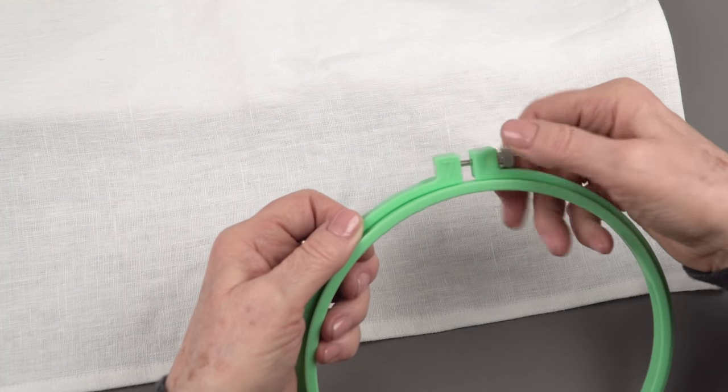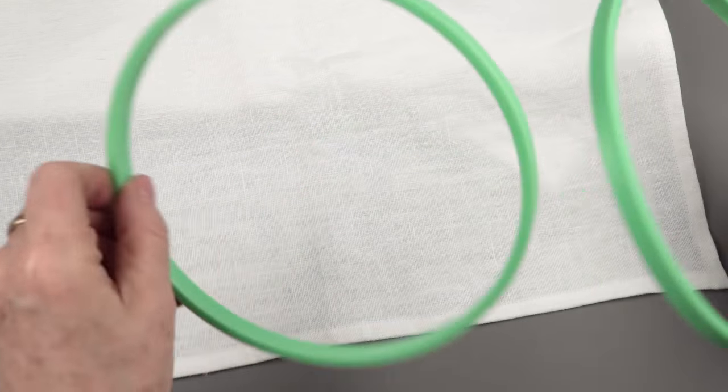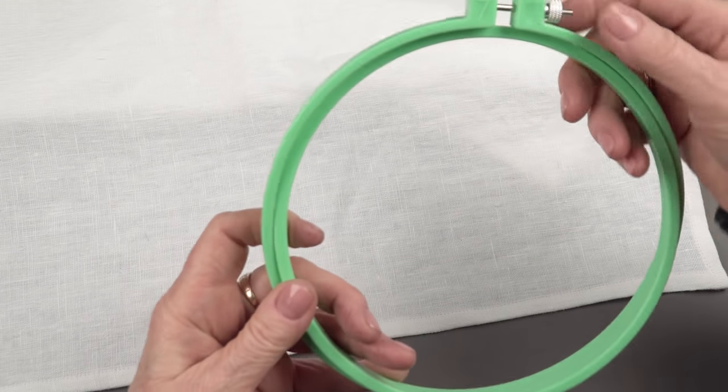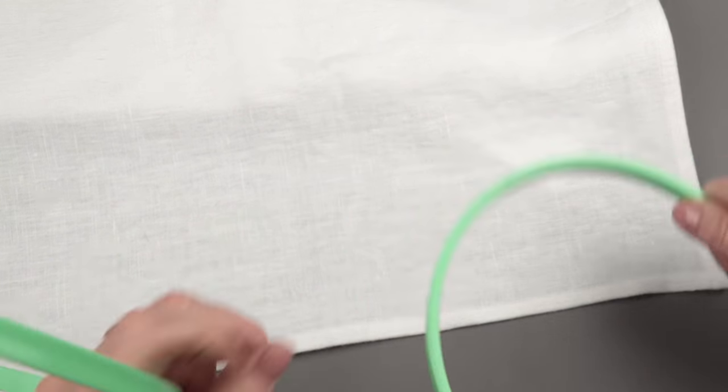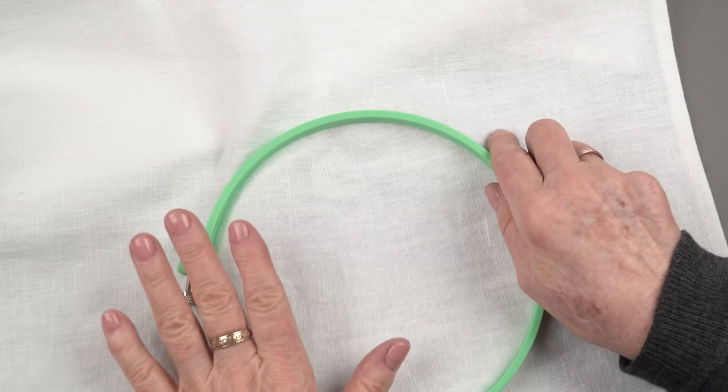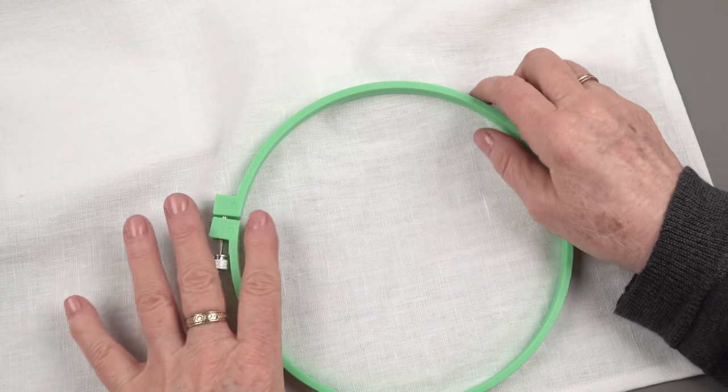Hoops are two pieces generally. More than that if you count the little screw data here. But there's a bottom piece or an insert piece and the bigger piece that has the screw that tightens down. So the inside piece will go down on the bottom. This goes on the top and I'll show you later how to set that up so you're ready to stitch.